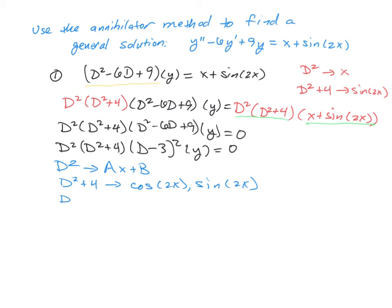And then our d minus 3 squared is going to give us an e to the 3x and an xe to the 3x.